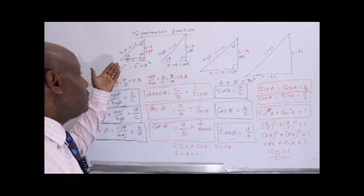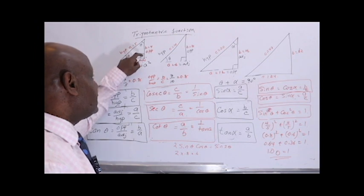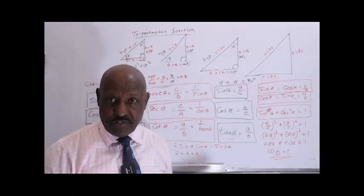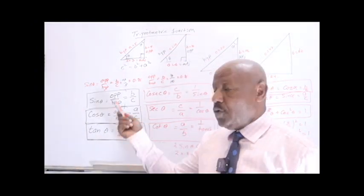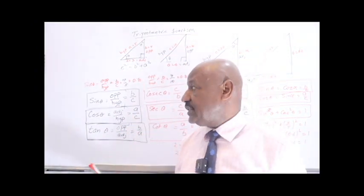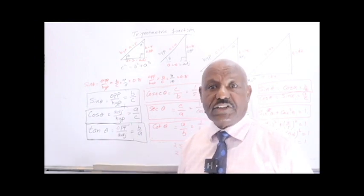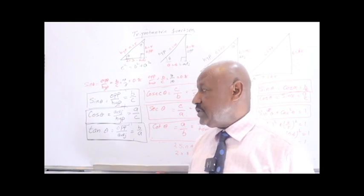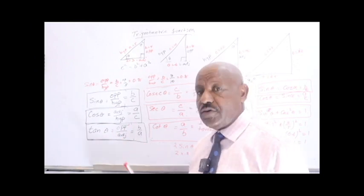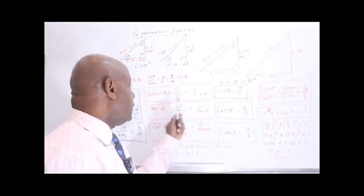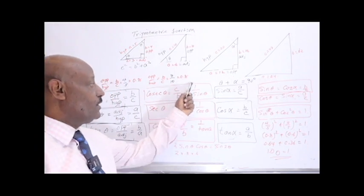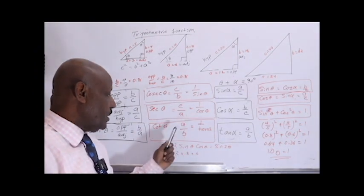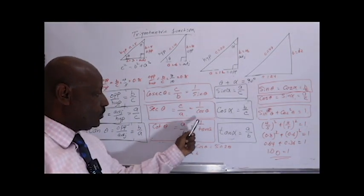We see there is a relation between the angle and the sides of a triangle, known as trigonometric function. Most importantly, we always use this type of function in physics. Sin theta means opposite over hypotenuse. Cos theta is adjacent over hypotenuse. Tan theta means opposite over adjacent. Cosecant is the inverse of sin theta. Secant means the reciprocal of cos theta. And cotangent theta means the reciprocal of tan theta.